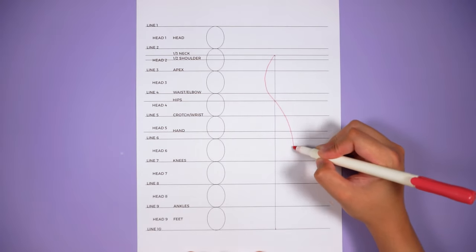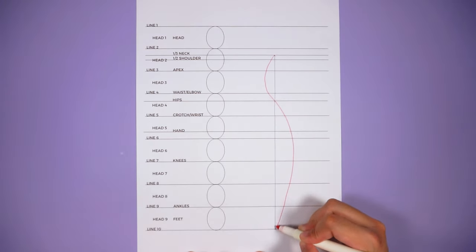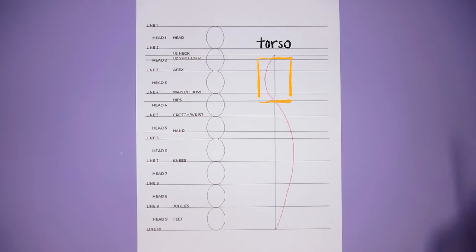But this guideline or this curve is basically what the term contrapposto is all about, because the curve of the upper body counters the curve of the lower body, just like the letter S. This guideline will also be helping us determine the curve of the torso, which is normally from the shoulders to the hips. That will lead us to the next set of guidelines.